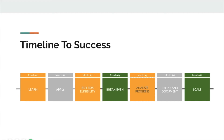Month five is analyzing your current progress. Month six is refining that progress and documenting what you've already done. Month seven, based off all the information you've learned from the first six months, you move into scaling — and that includes hiring and training employees, learning different repricing strategies, adjusting your handling times, and a lot more.